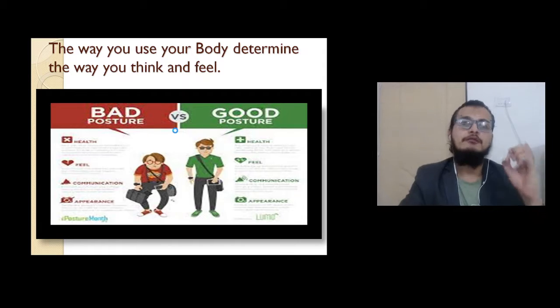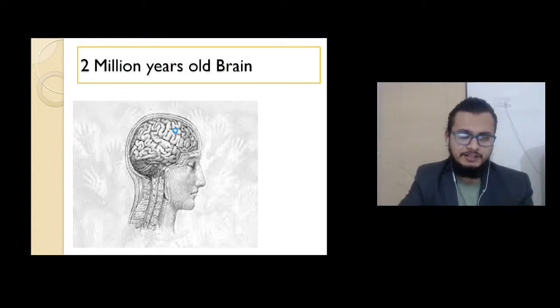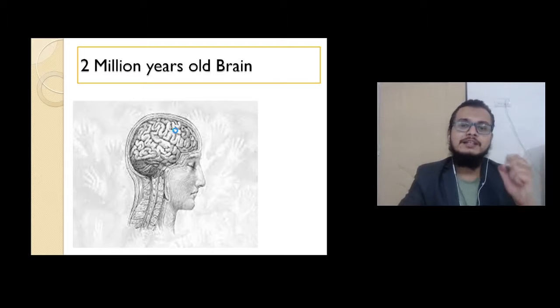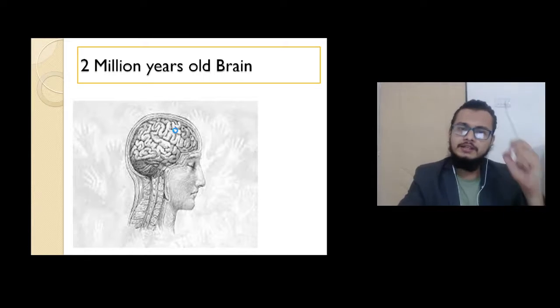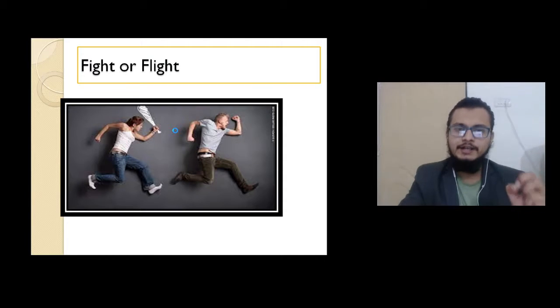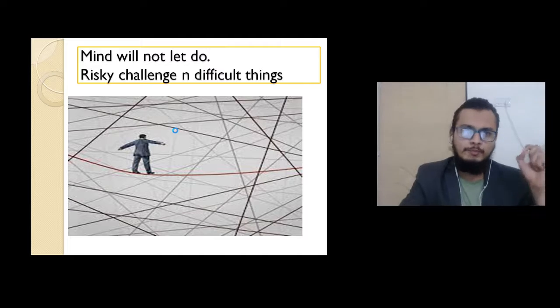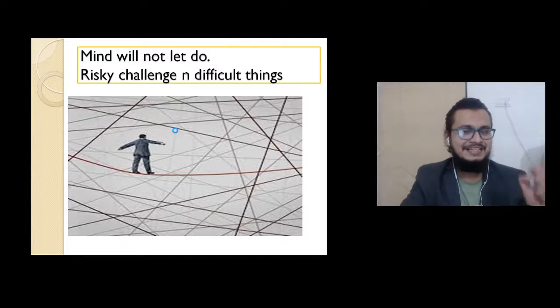We must understand that our brain is two million years old. It is not designed to make you happy; it is designed to make you survive. You are either in fight or flight mode, so your brain will not let you do risky, challenging, or difficult things.